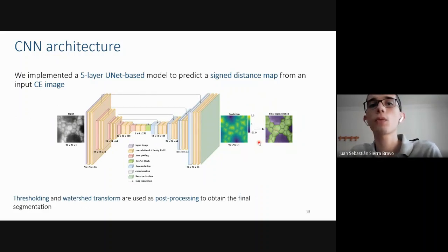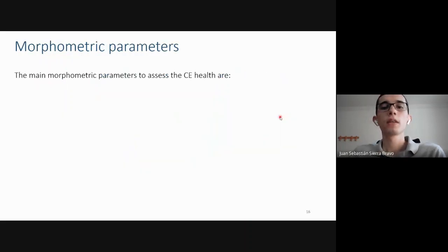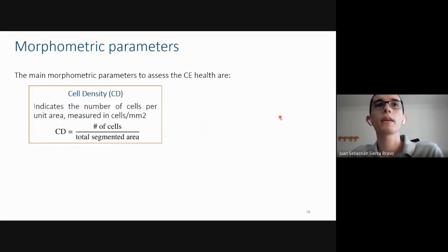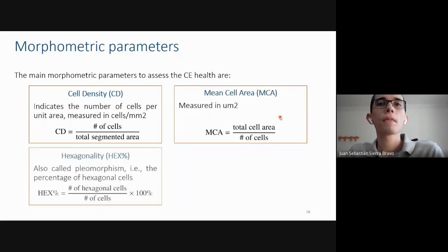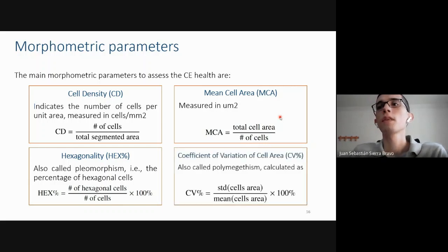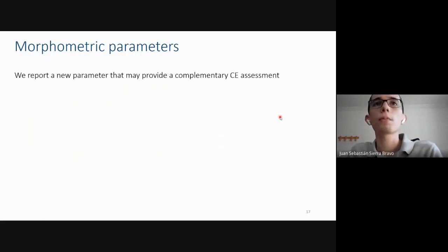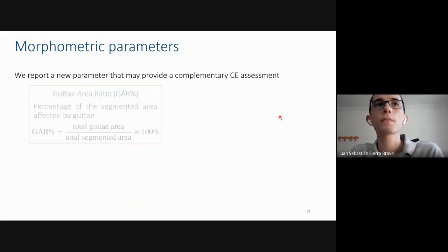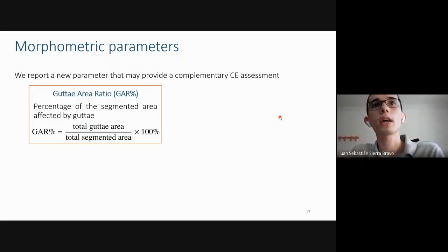Thresholding and watershed transform are used as post-processing to obtain the final segmentation. Before we talk about the results, it is important to know the main morphometric parameters to assess the cornea endothelium health, which are: cell density, which indicates the number of cells per unit area; mean cell area; hexagonality, which is also called pleomorphism and represents the percentage of hexagonal cells; and the coefficient of variation of cell area, which is also called polymegethism. We also report a new parameter that may provide a complementary cornea endothelium assessment, which we call gutta area, which corresponds to the percentage of the segmented area affected by gutta.